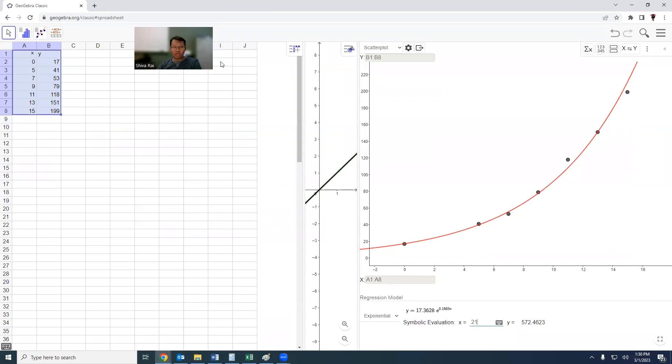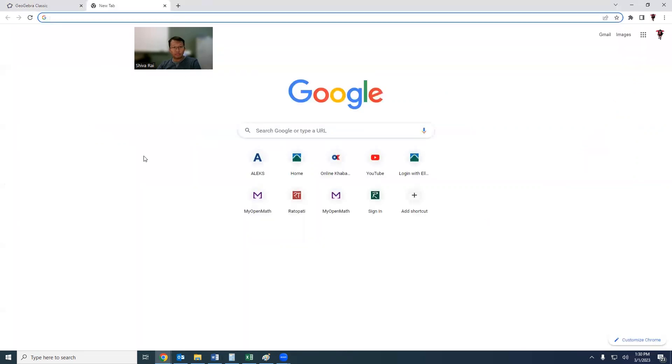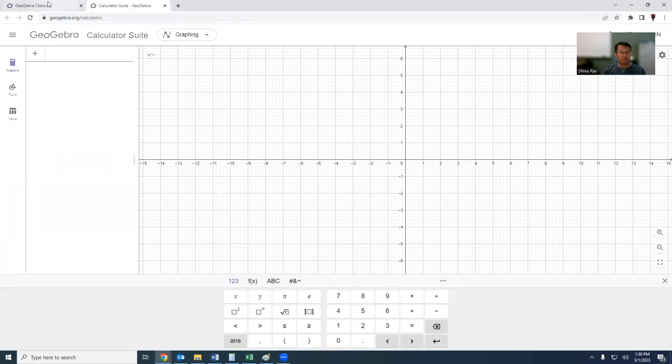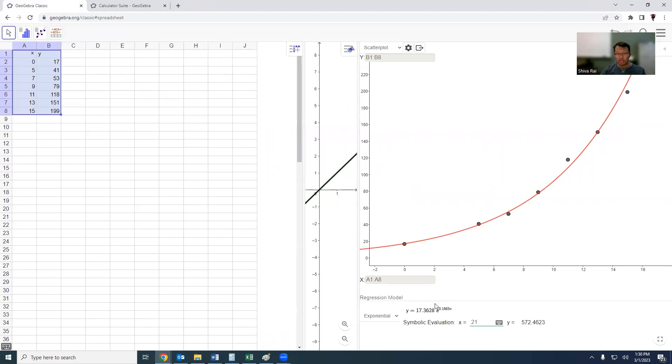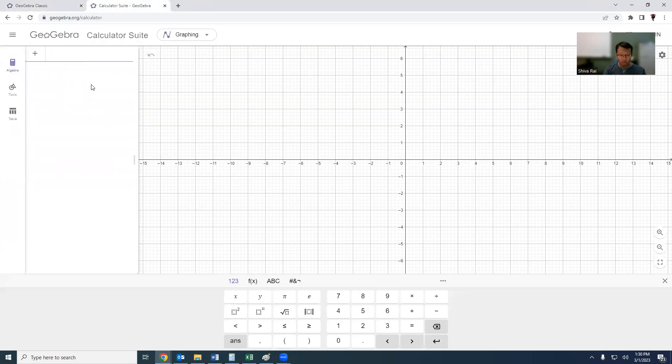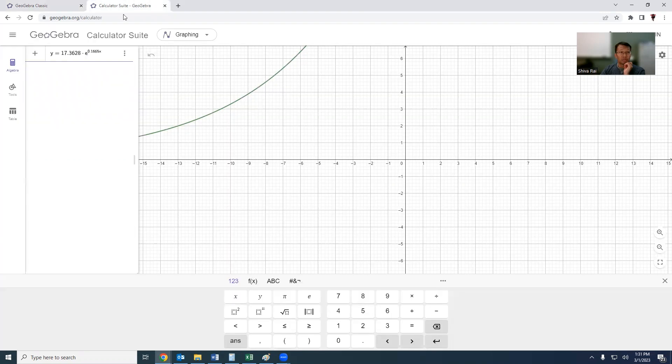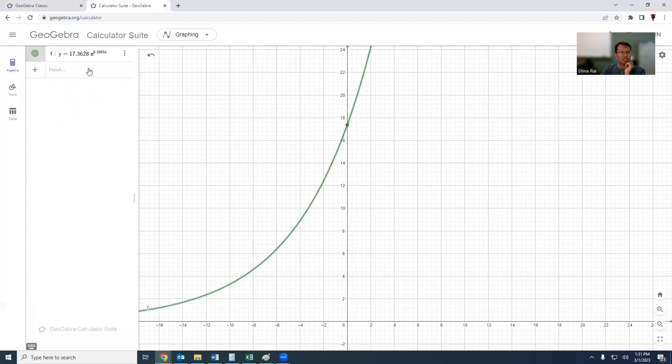Let's go for GeoGebra. In GeoGebra you just plug in that value which is 17.3628. Y equals 17.3628 times e to the power 0.1665x. Let me just make sure I have typed correctly. That looks good. Since 17.36 is the initial value, this is the point. I think I should zoom out.